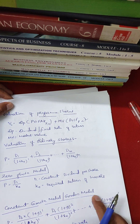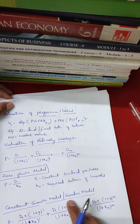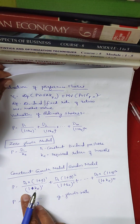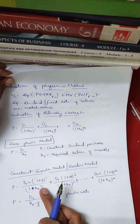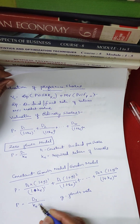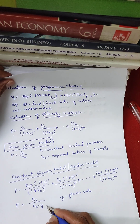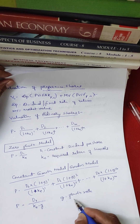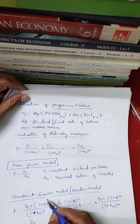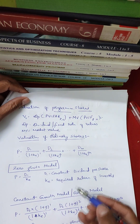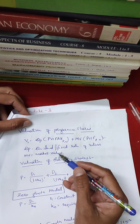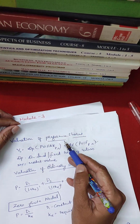Constant growth model, also known as the Gordon model: P is equal to D1 divided by (KE minus G), where G is the growth rate. This is the formula for the constant growth model. For the zero growth model, G is equal to zero.